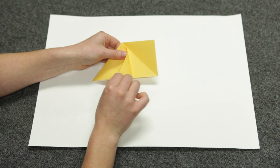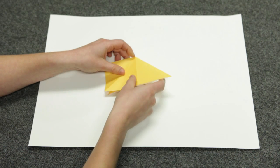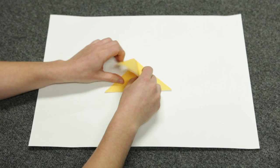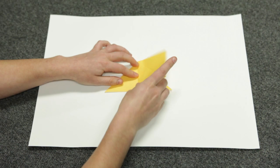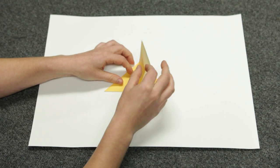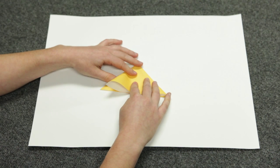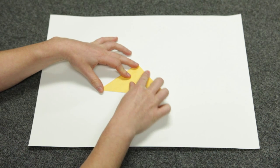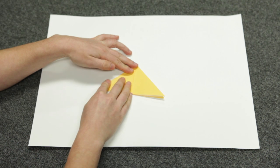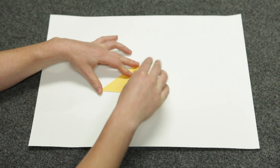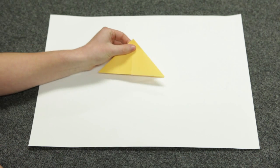Now we're going to flip it over and repeat that step on the other side. Lift up the left side and press it down into a triangle again. It should end up looking like this.